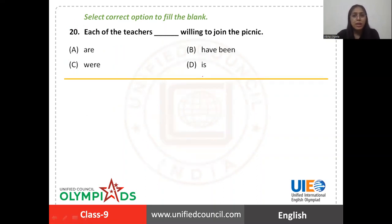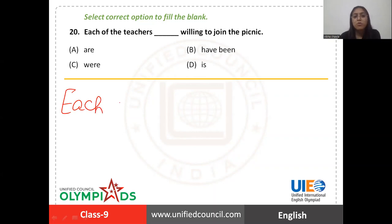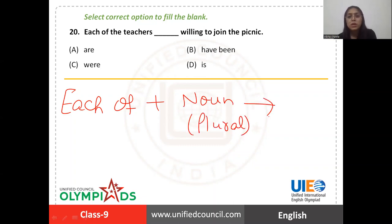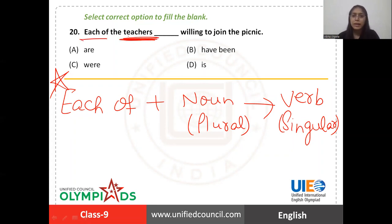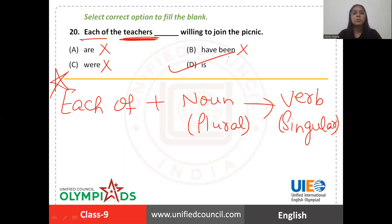Next question: 'Each of the teachers blank willing to join the picnic.' Here is a very important rule: after 'each of', the noun should always be plural, but the verb following it should always be singular. In 'each of the teachers', the noun 'teachers' is plural — correct. But the verb in the blank should be singular. The plural options can be eliminated. The only singular verb given here is 'is', which is the right answer. So the sentence is: 'Each of the teachers is willing to join the picnic.'